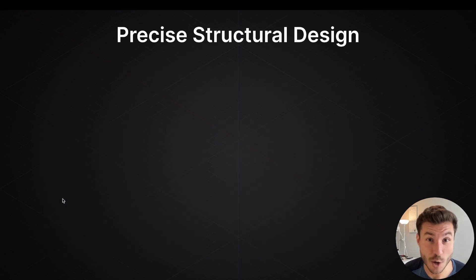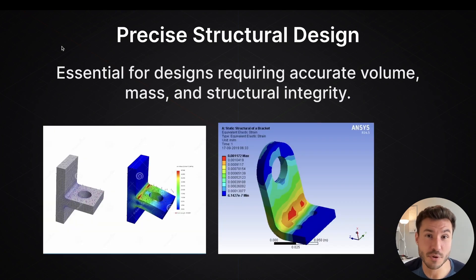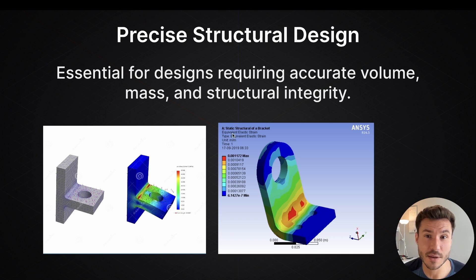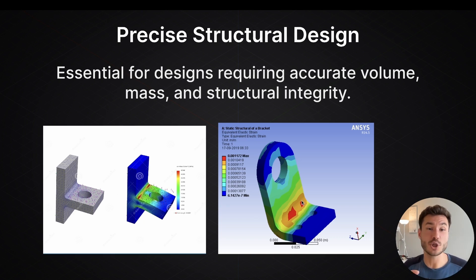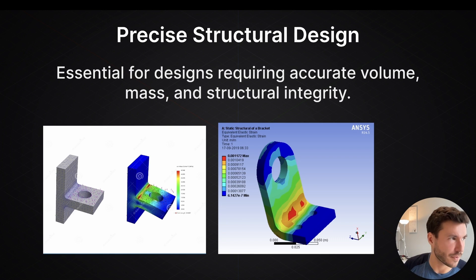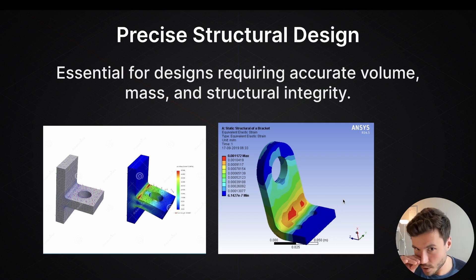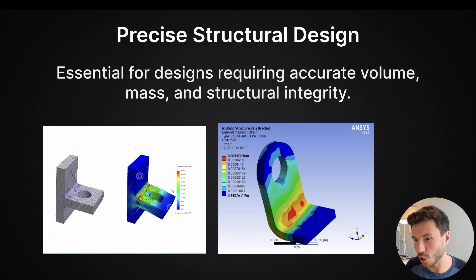Solid modeling is also used for precise structural design — it's essential for designs requiring accurate volume, mass, and structural integrity. With solid modeling, you can also do a lot of analytics and tests, like determining how strong a part is. You can't do this in Plasticity, but in professional manufacturing software there's a lot of analysis and testing available.